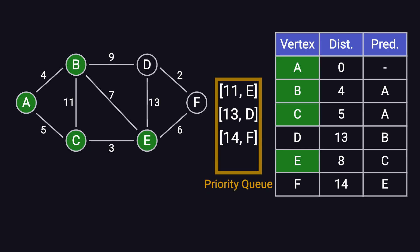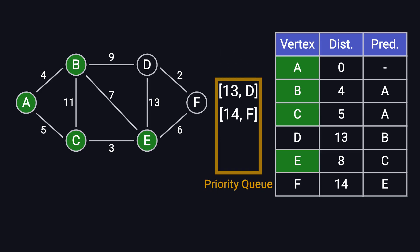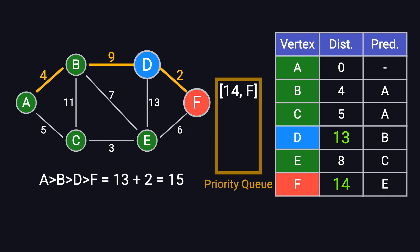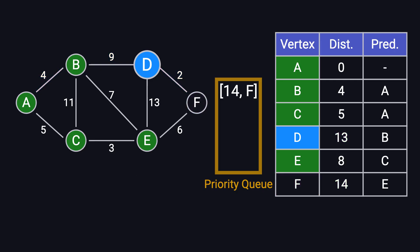The priority queue now contains 11E, 13D, and 14F. Since E has already been processed, we skip it. The next shortest node is D, so we process it. D is connected to B, E, and F. Since B and E have already been processed, we skip them. For F, going through D costs 13 plus 2 equals 15, which is worse than the current shortest distance of 14, so we don't update it. Finally, we mark D as processed.